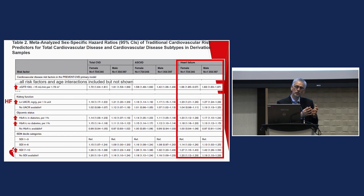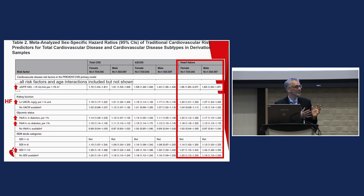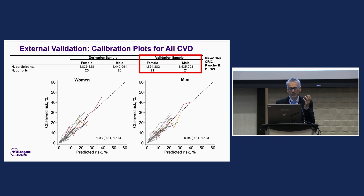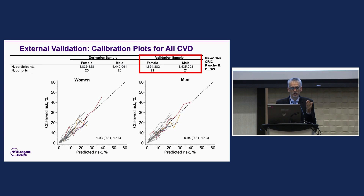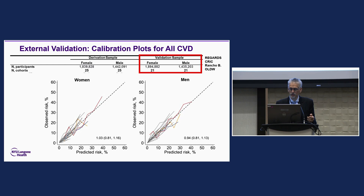We've also tried to integrate into the dominant forces in each place. If Europe wants to use SCORE, we've built a patch to add kidney disease. It's an interesting question what Asia — which is not one thing — wants to do. In terms of validation, we had a derivation sample of 3 million people and a validation sample of 3 million people across 21 cohorts. Three of them — REGARDS, CRIC, and Rancho Bernardo — are individual cohorts shown in different colors, and the other 18 are different health systems within the Optum Laboratory data warehouse in the U.S.